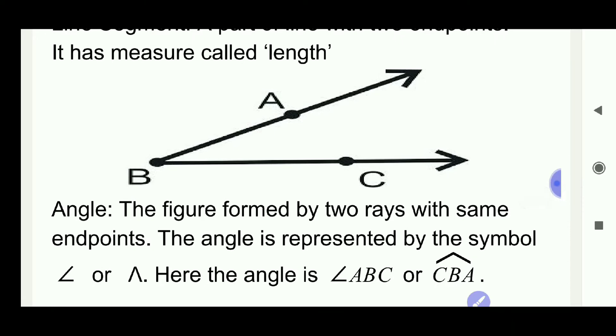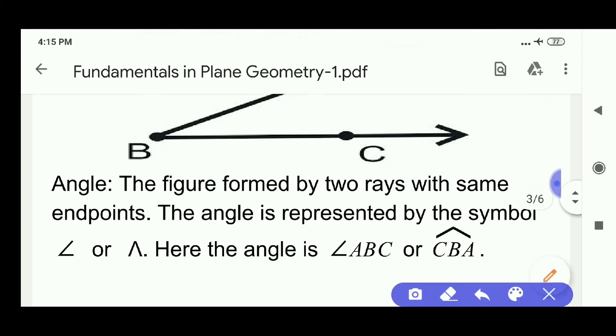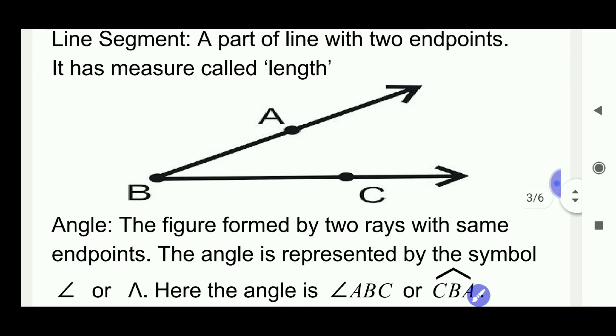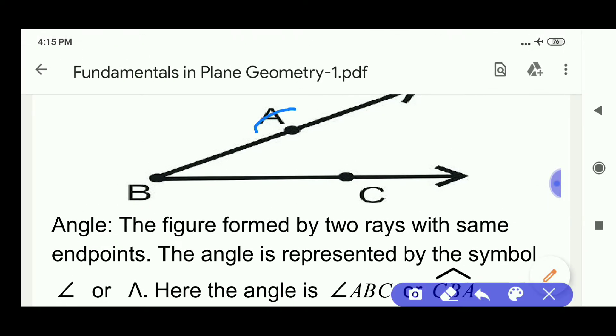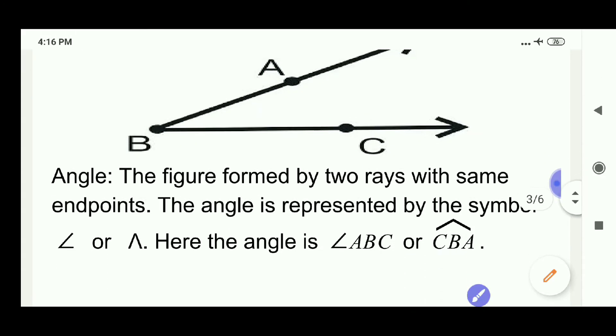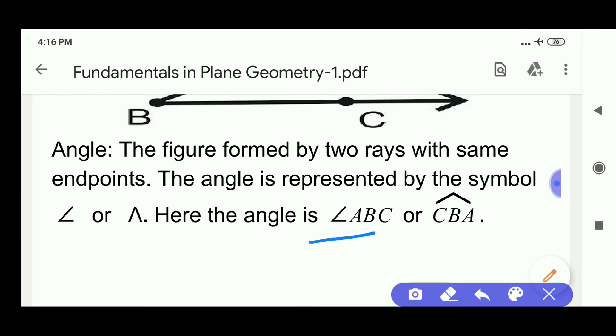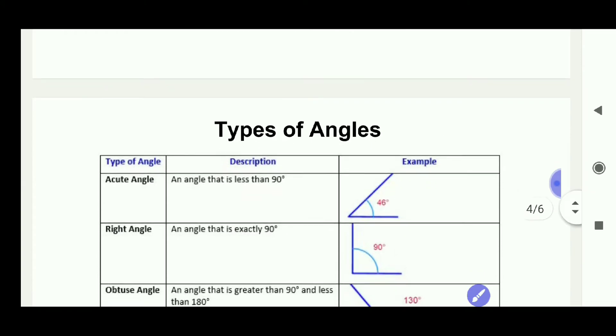Angle. A figure formed by two rays with same end point. The angle is represented with the symbol. Observe here the symbol, angle or this symbol. Here in this figure ABC we represent the angle like angle ABC or angle CBA. Types of angles.